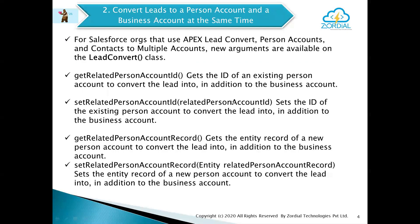The next one is converting leads into Person Account and Business Account at the same time. So instead of a contact, we can convert the lead into a Person Account and Business Account. For that we have to use the Flex API, and we need to use a couple of methods like setRelatedPersonAccountId and setRelatedPersonAccountRecord.